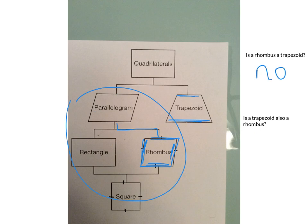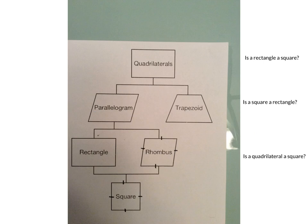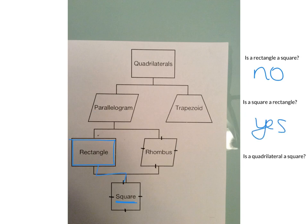Is a trapezoid also a rhombus? No — a trapezoid does not fall underneath the rhombus on the family tree, so a trapezoid is not a rhombus. Is a rectangle a square? No, the rectangle does not fall underneath the square on the family tree. Is a square a rectangle? Yes — the square falls underneath the rectangle on the family tree, so yes, a square is a rectangle.